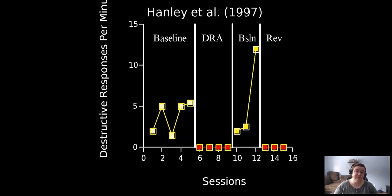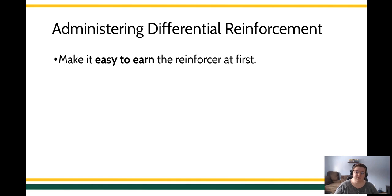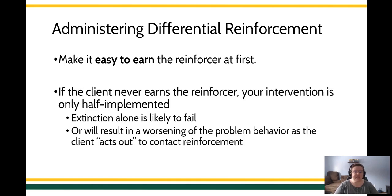This is a perfect example of differential reinforcement for an alternative response, and it highlights some key rules. First, the alternative response — actually asking for attention — was an easy behavior. When using differential reinforcement, you want to make that alternative response very easy to contact the reinforcer, so it's not harder to earn the reinforcer than it was through the problem behavior. Simple is better. Make sure the client is actually earning the reinforcer. Matching law says you want tons of reinforcement available for the behavior you want and none at all for the behavior you don't want.